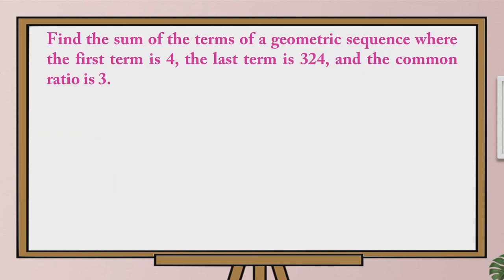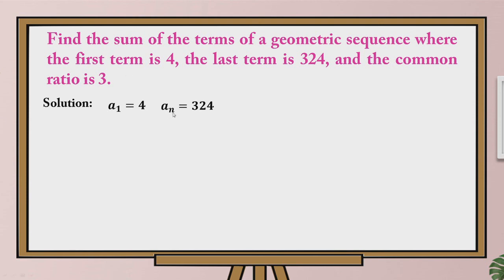Lastly, what if we are given this problem: find the sum of the terms of a geometric sequence where the first term is 4, the last term is 324, and the common ratio is 3. We are not given the geometric sequence itself, but we are given the first term which is 4, the last term which is 324, and the common ratio of 3. So for the solution, we have A sub 1 equal to 4, A sub n equal to 324. Take note, we don't know n, but we know that 324 is the last term. The common ratio is equal to 3.